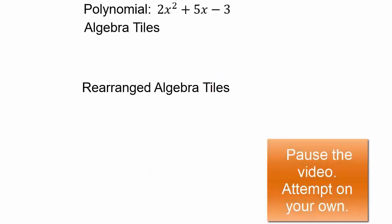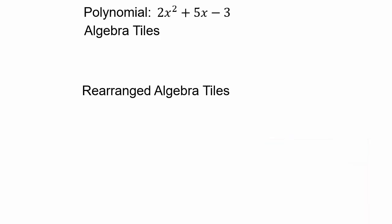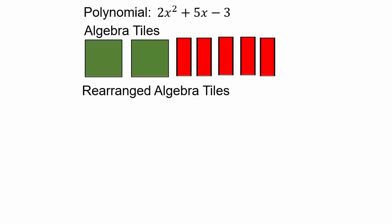Now you might be thinking: how can we handle subtraction? Subtraction means take away. So take away 3 means take away three 1-by-1 squares. We have 2 x squares and 5 x's. I have to remove 3 little squares — so I'll remove 3 from the red rectangles. So that's how it would look — we now have some broken pieces and we have to put them all together.